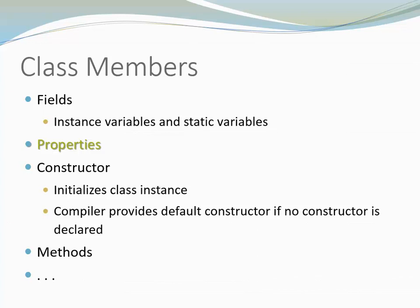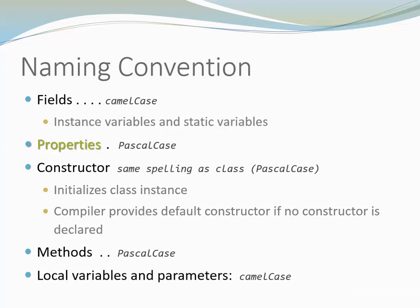One of them is properties. But there are also events, indexers, operators, and more. Let's have a brief look at C-sharp naming conventions. Fields, constructors, local variables, and parameters are spelled just like in Java.